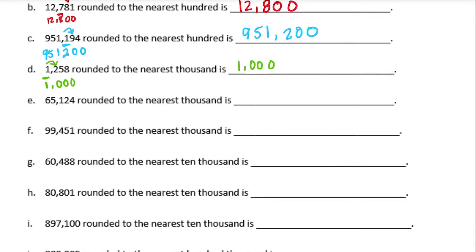65,124 rounded to the nearest thousand. The thousands place is the five. Next to it is a one — that's four or lower — so the five stays the same, everything behind it turns to zeros, and what's in front stays the same. So 65,000.